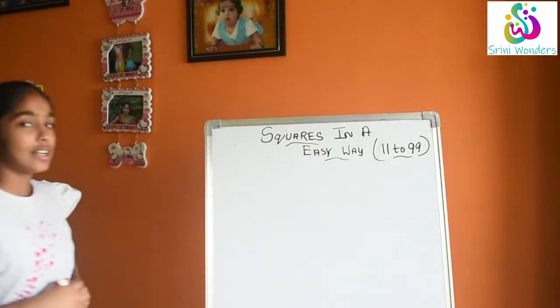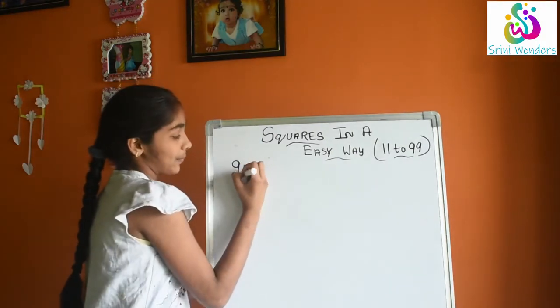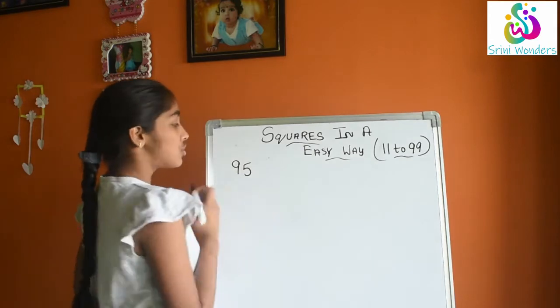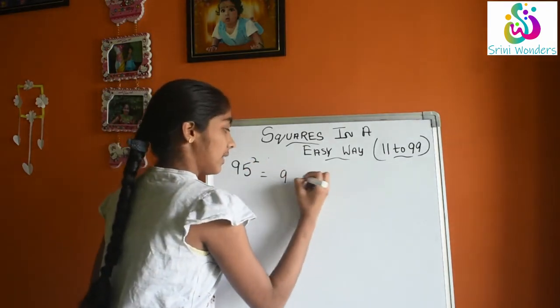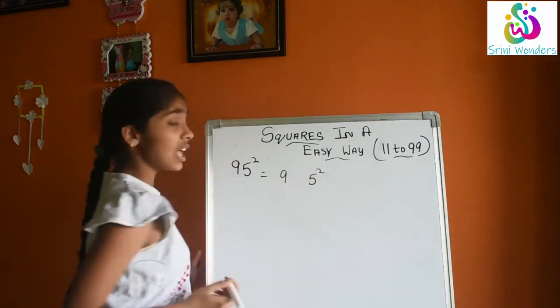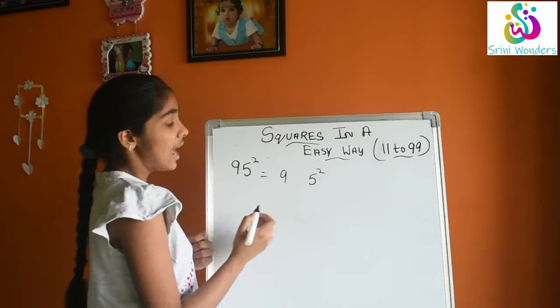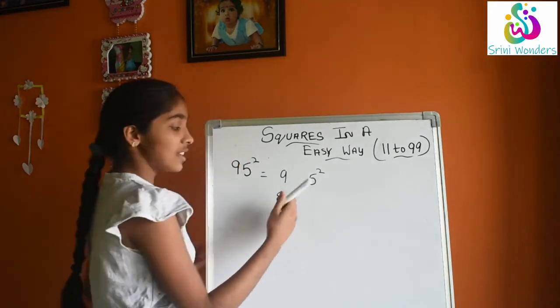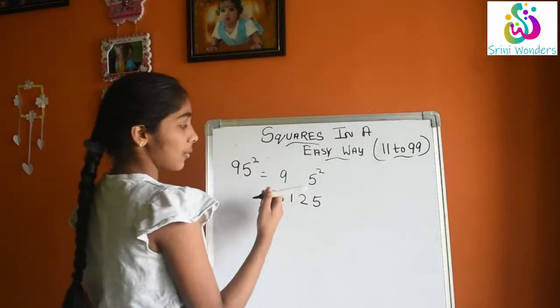Now I will take one more example. I will take the example as 95 square. How to do? Now we will write down the squares of both the numbers, 9 and 5. 9 square is 81. 5 square is 25.